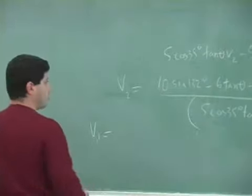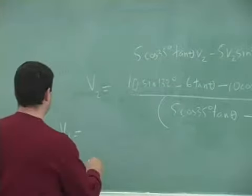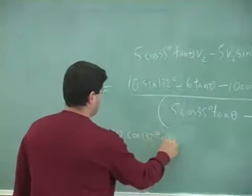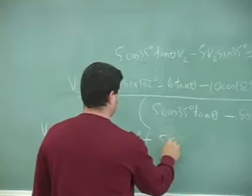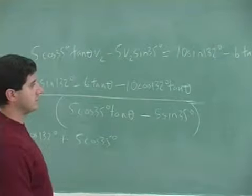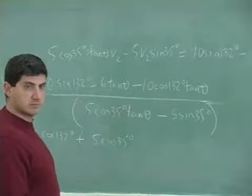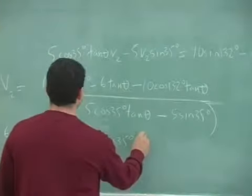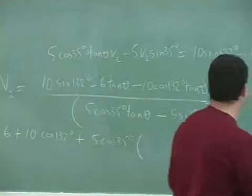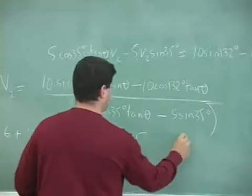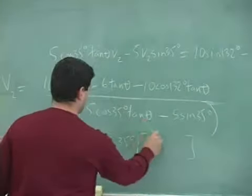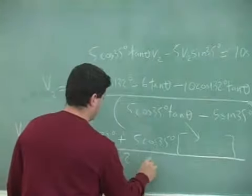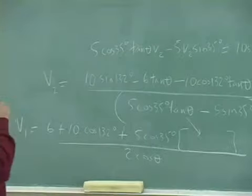So V1 is equal to 6 plus 10 cosine of 132 plus what? 5 cosine of 35 times what? V2, right? And then V2 is what? This thing. You know what, let me just write it like this. This whole thing right here, this whole thing goes over here. Divide it by 2 cosine theta.